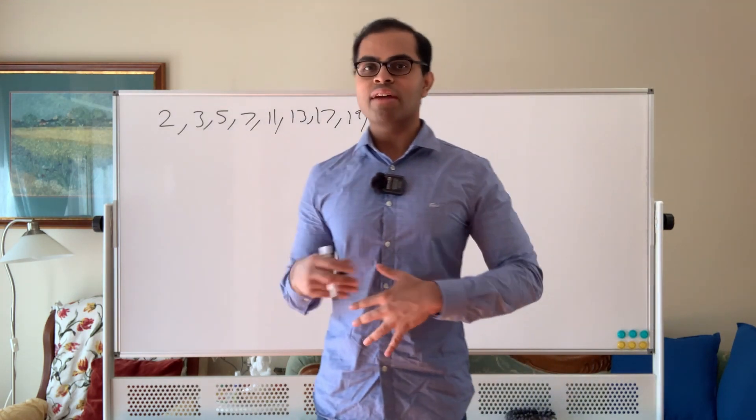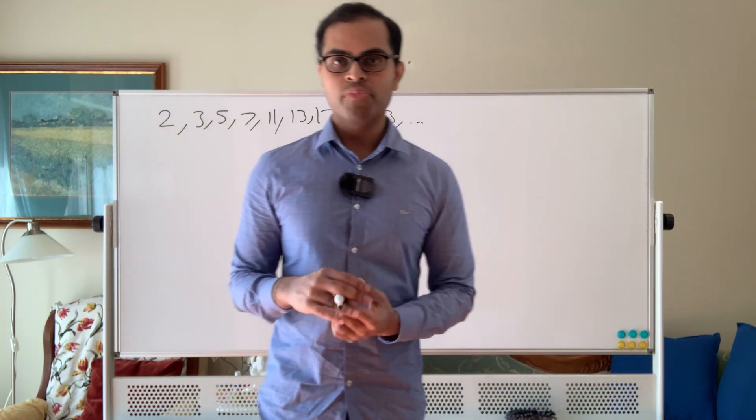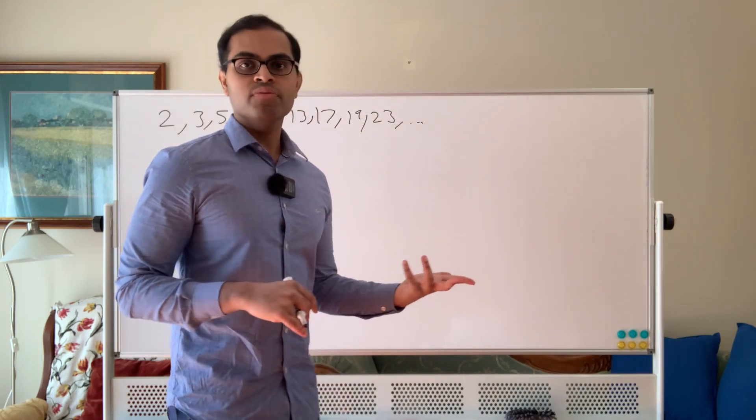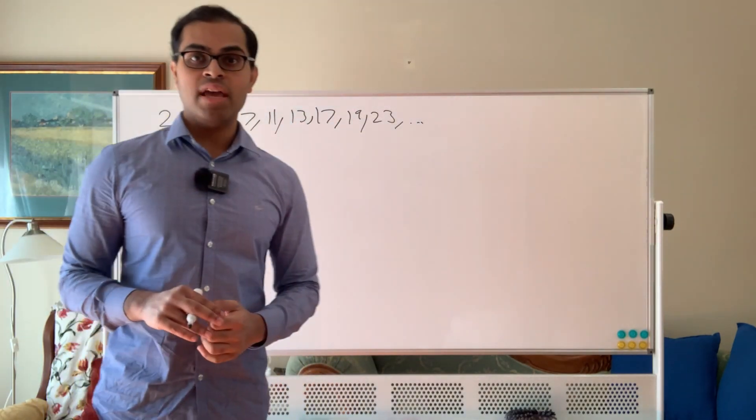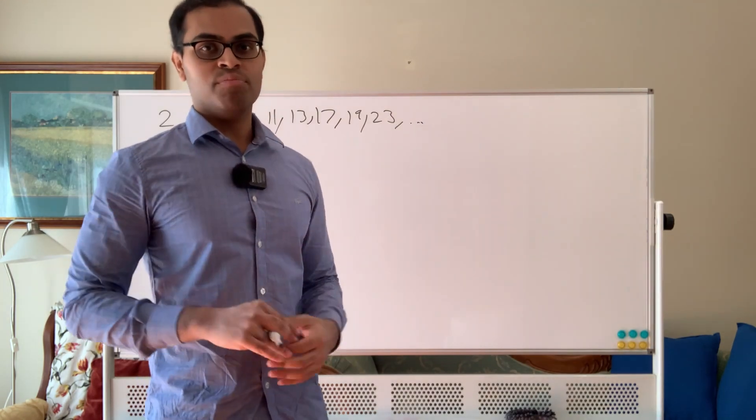Euclid proved that there are infinitely many primes, so that the primes just keep on going forever and ever, and we're going to mathematically prove this. We're going to give a rigorous, watertight argument.